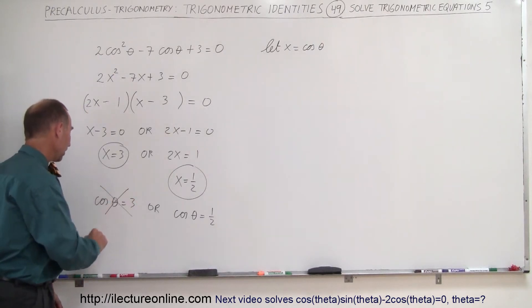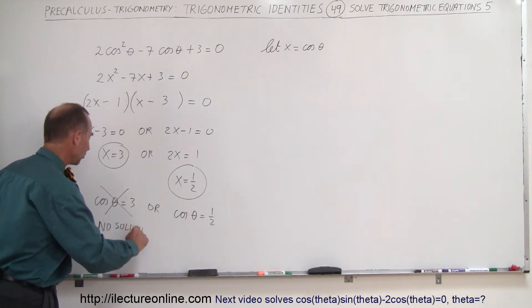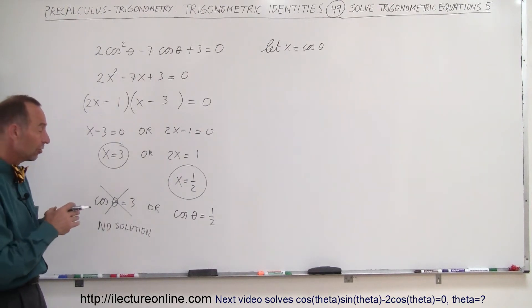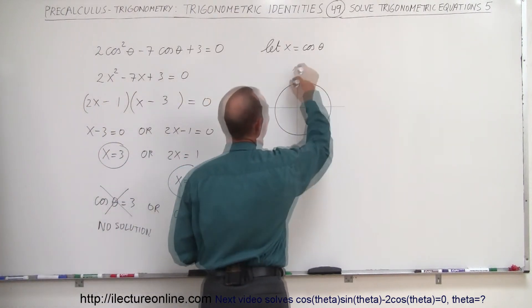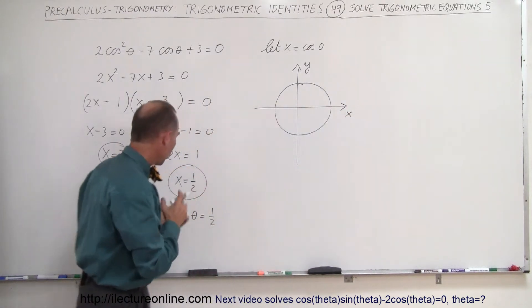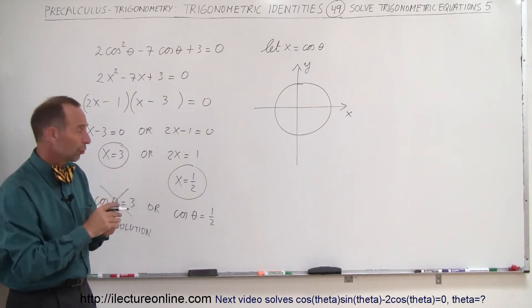So here we simply say there's no solution for this particular option. But here we do have a solution, because the cosine of theta can equal 1 half. Let's draw the unit circle there. So if we draw the unit circle, we have the y-axis, we have the x-axis, and remember that the cosine of the angle is equivalent to the x value of a point on unit circle.